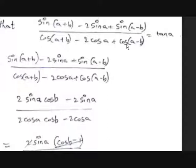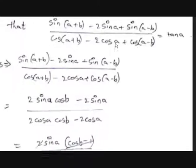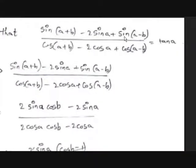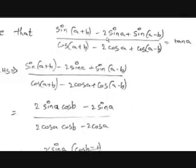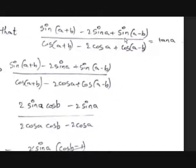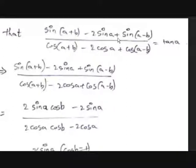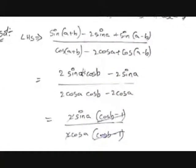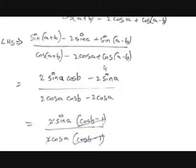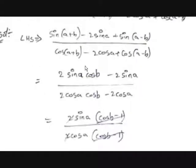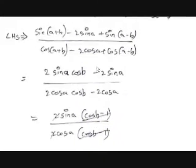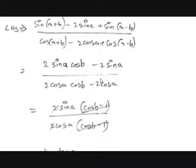How can we prove this? Similarly to the last example, we prove step by step. We know that sin(A+B) + sin(A−B) = 2 sin A cos B, so we write 2 sin A cos B in the numerator. And cos(A+B) + cos(A−B) = 2 cos A cos B, so we write 2 cos A cos B in the denominator. The −2 sin A and −2 cos A terms remain.